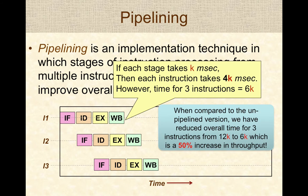Without pipelining, three instructions took 12k units of time. With pipelining, the same task is accomplished in 6k units of time — a 50% increase in throughput, which is a significant jump.